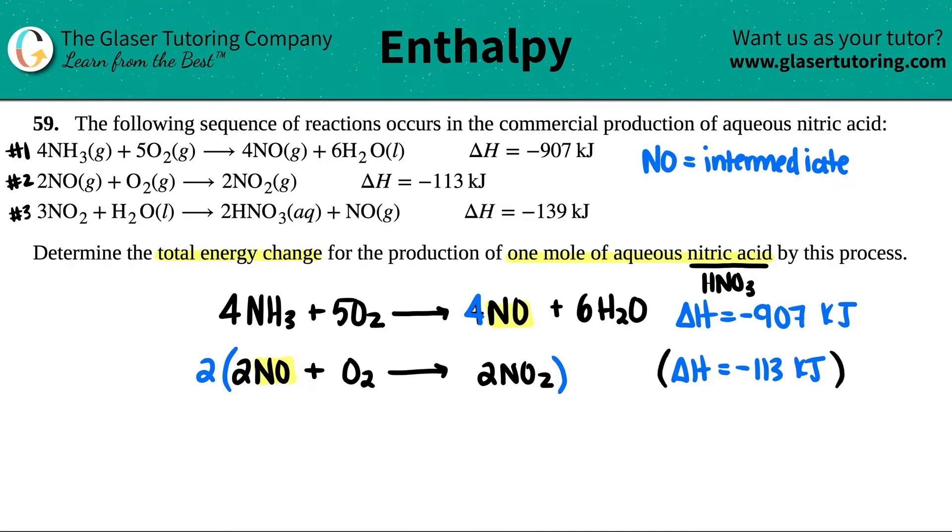We've done this before. We just have to multiply all of the coefficients. You got to be fair. But here's another thing. If you multiply an equation, you also have to multiply the delta H value as well. So this whole thing has to be multiplied by two. I'm going to change all the coefficients. It won't be two NOs anymore, it will be four. One O2 becomes two O2. And then two times two, I now have four NO2. And two times negative 113 is negative 226 kilojoules.